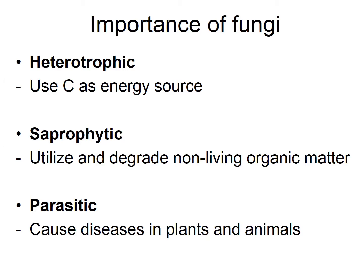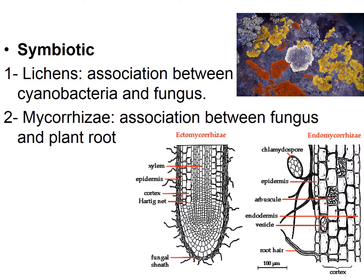Fungi are the second most important organisms in the food chain because many of them have the ability to recycle carbon and other organic material — they are the degraders. Most of their feeding is either heterotrophic, using organic carbon as an energy source, or saprophytic, utilizing and degrading non-living organic material such as dead plant and animal material. Some fungi can also be parasitic, relying on host cells to obtain nutrients, and they often cause diseases in plants and animals.